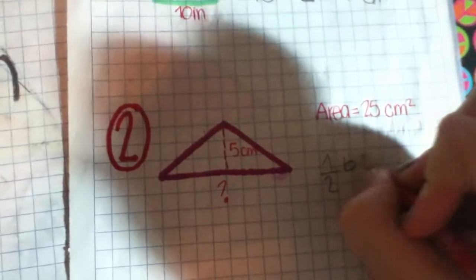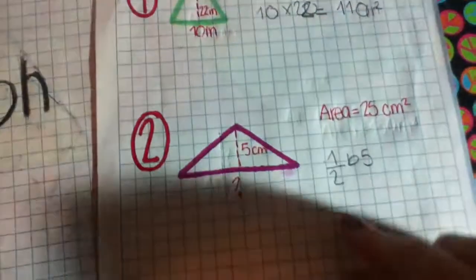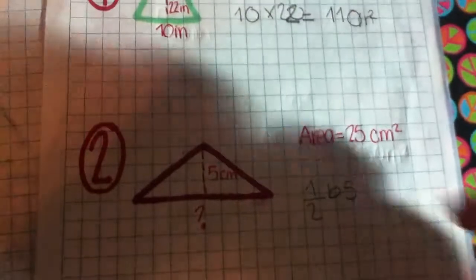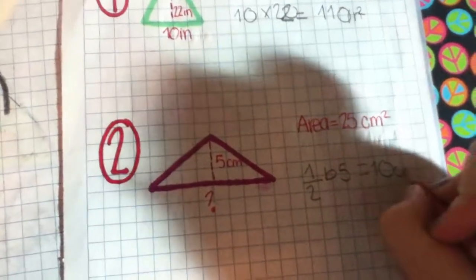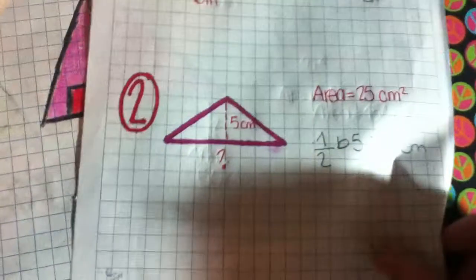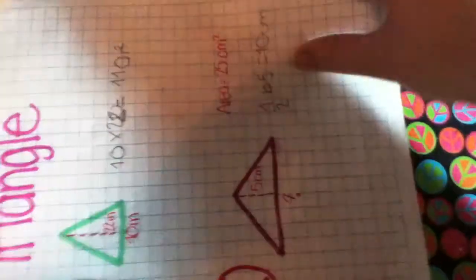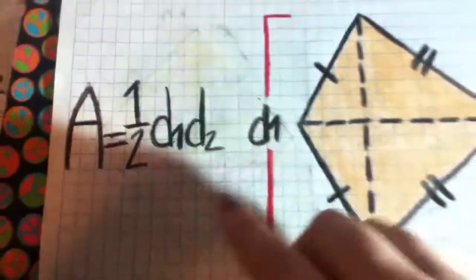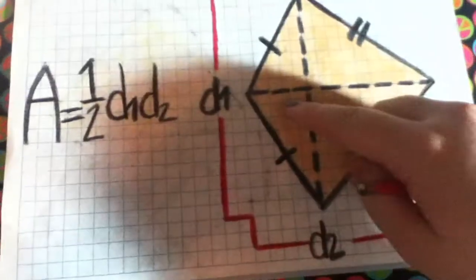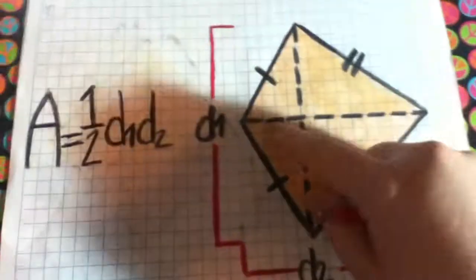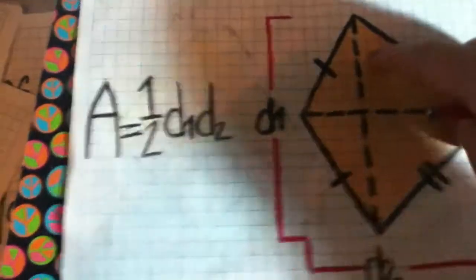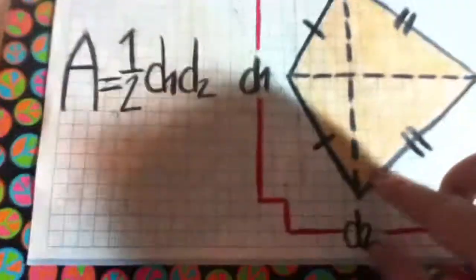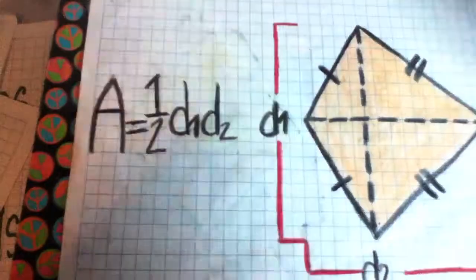Now we're going to work with a kite. This is considered like a sign it goes through this half and then the other one cuts it to the other half. This is the formula for the area. Let's work on some exercises.